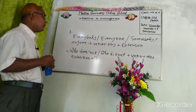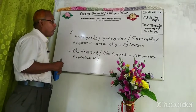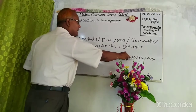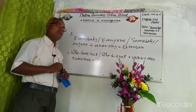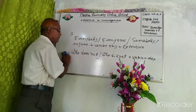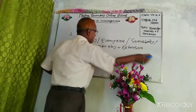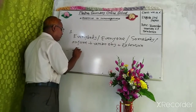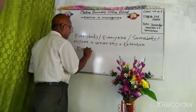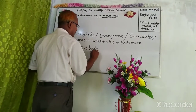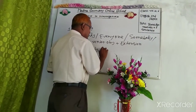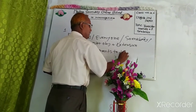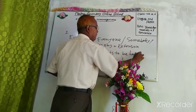Okay dear students, but always remember when you change assertive to interrogative sentence, the main verb must be present. Main verb must be present. For example: everybody wants to be happy.